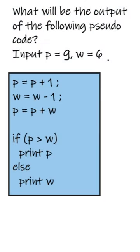What will be the output of the following pseudocode? We have given two variables p and w. p contains 9 and w contains 6.